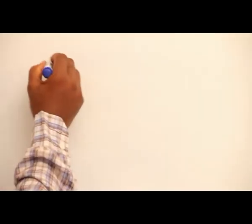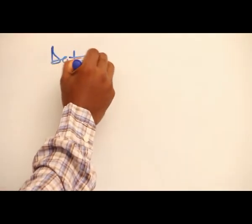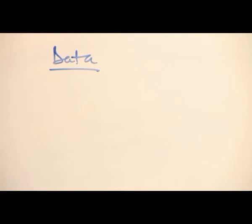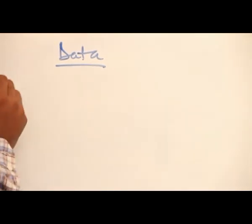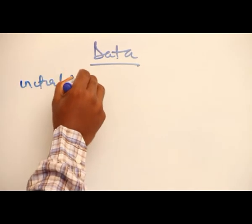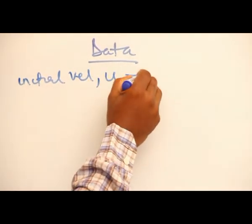The data from the question is: an object is drawn from a height with initial velocity represented by u = 0.